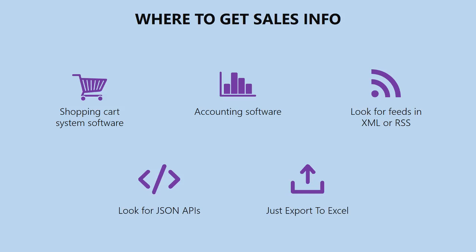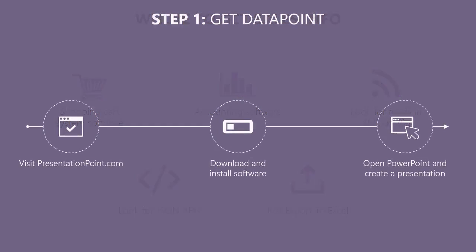Now that you've got your sales info, let's look at how to get it into PowerPoint. The first step is to get the PowerPoint add-on called Datapoint. To do this, visit presentationpoint.com, download and install the software, then open PowerPoint and create a presentation.